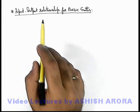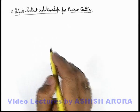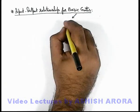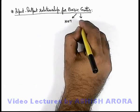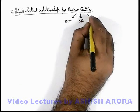Let us now study the input-output relationship for basic gates. We have already discussed the basic gates. Commonly used basic gates are three: NOT gate, OR gate, and AND gate.